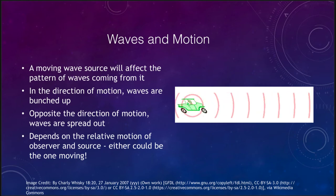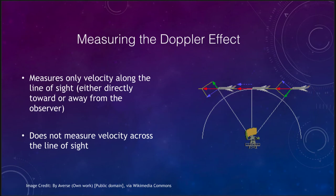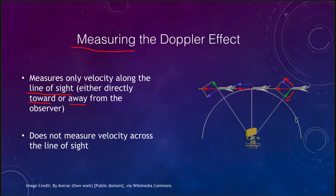So how do we measure the Doppler effect? It only measures a part of the velocity — what we call the velocity along the line of sight, which is the part of the velocity that is either directly toward or directly away from the observer. It cannot measure the velocity perpendicular to the line of sight. Looking at the airplane example, the green arrow shows the part of the velocity moving towards the observer, the blue arrow shows the part moving along the line of sight, and the middle arrow shows the true velocity of the plane through the sky. The Doppler effect can only measure the green portion.